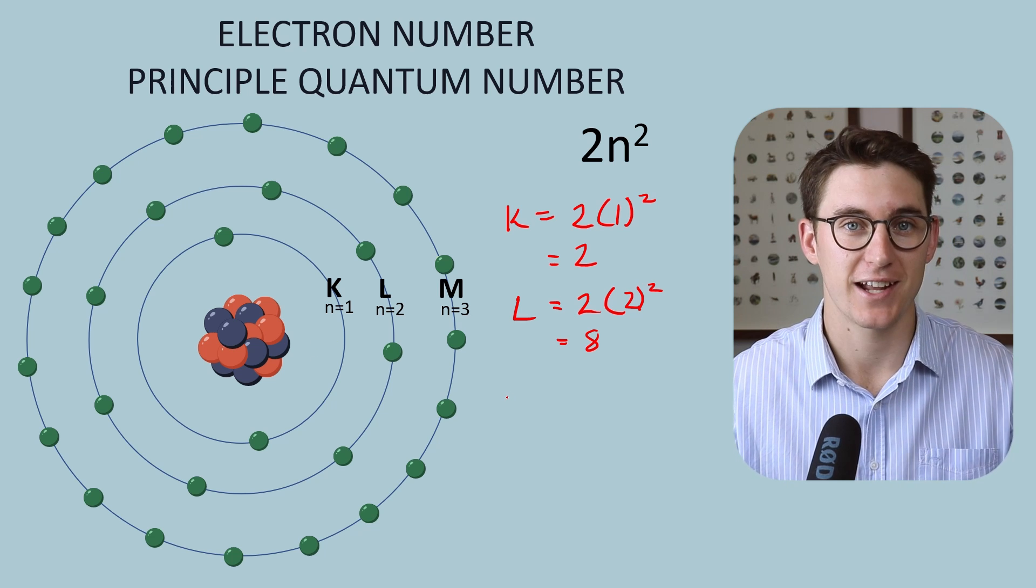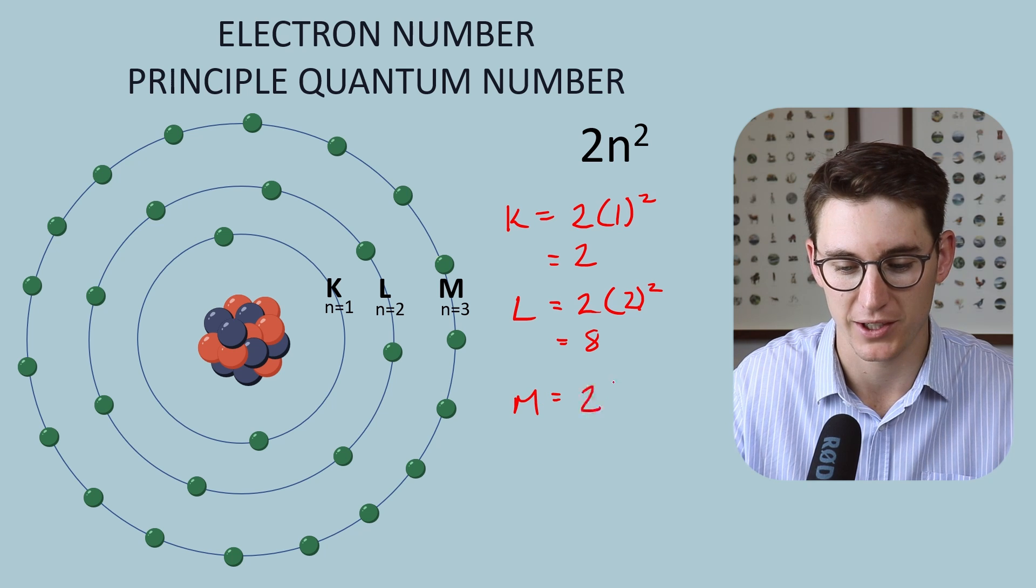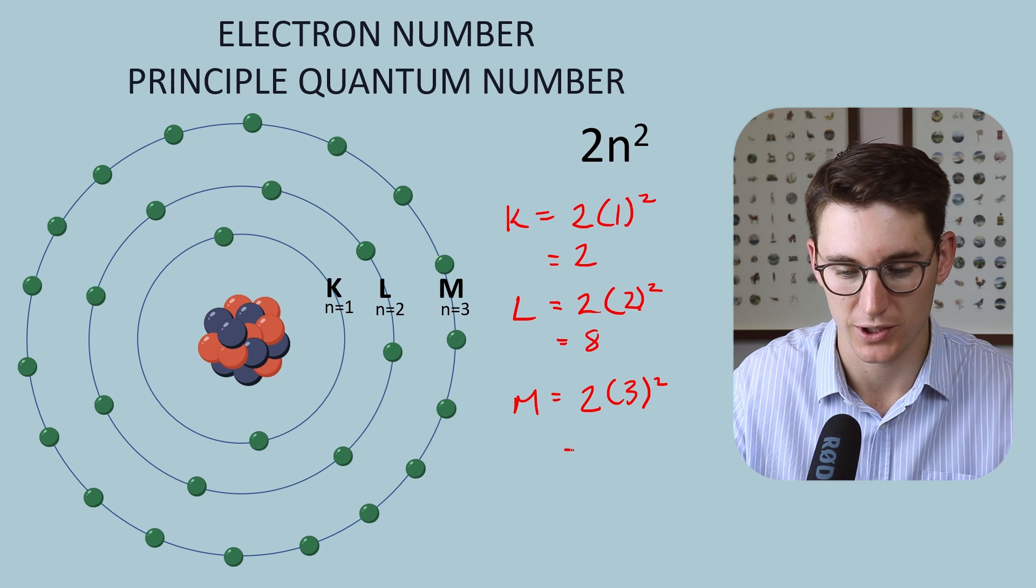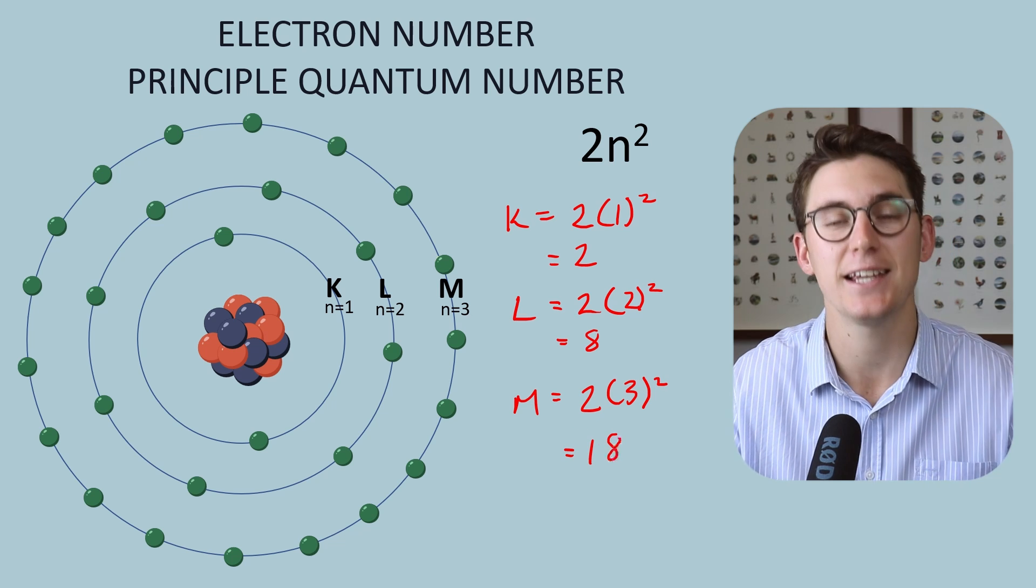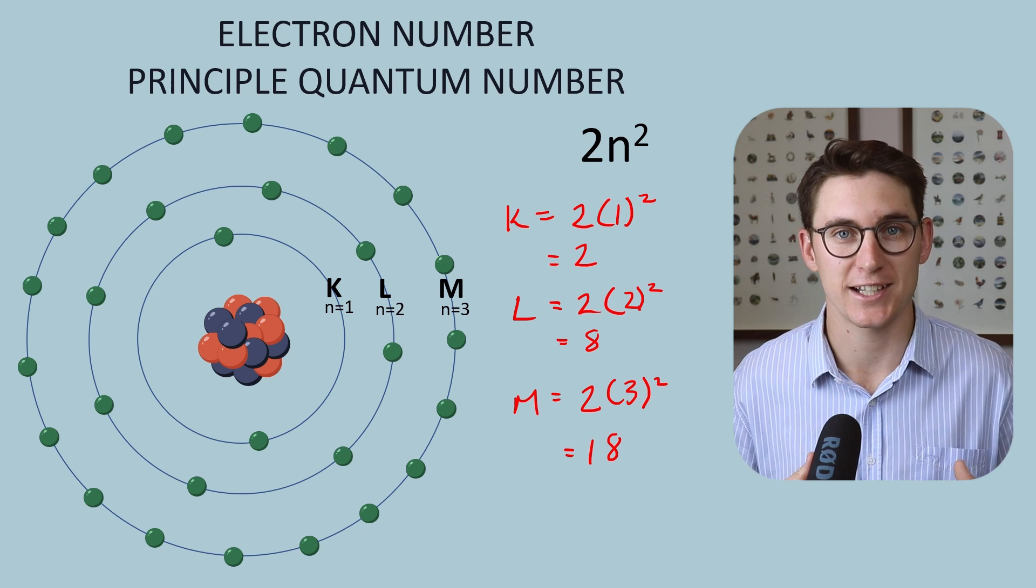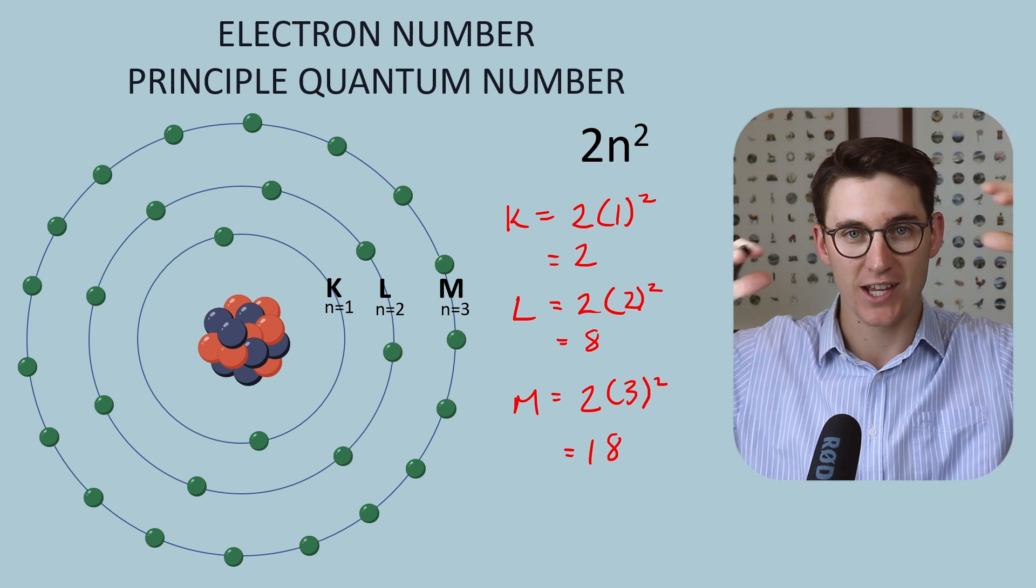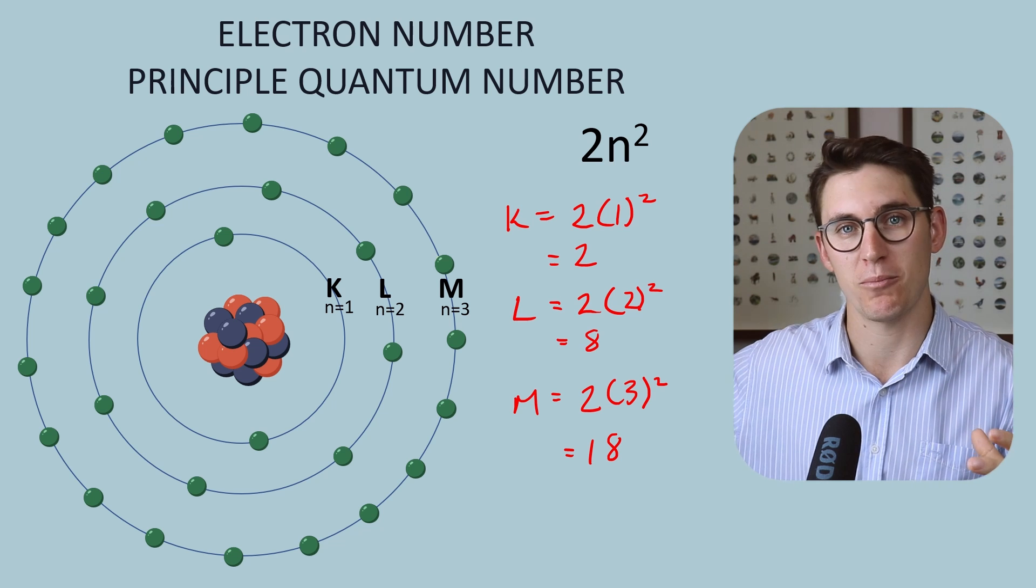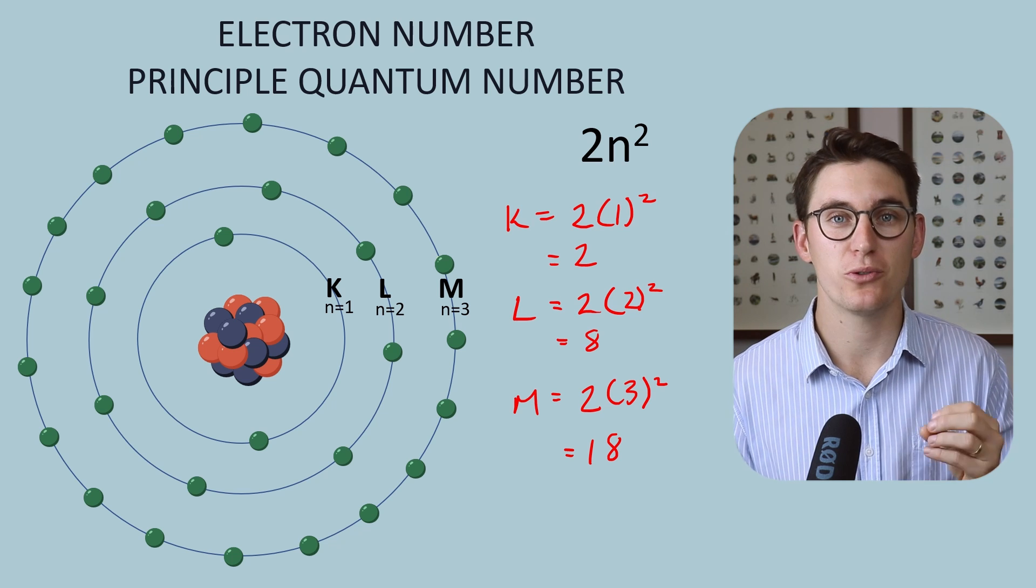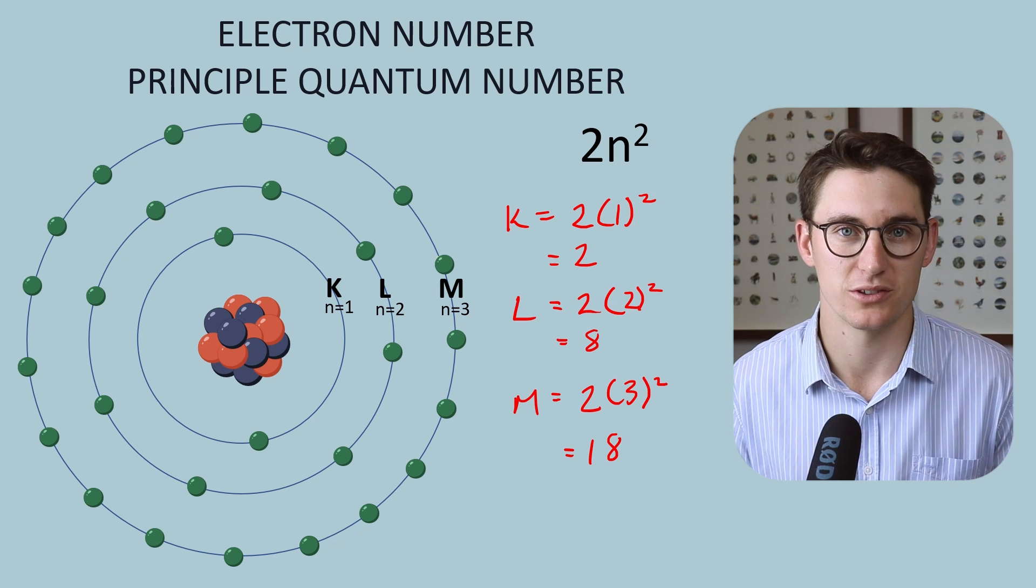Our M-shell then can house more electrons. Let's have a look at our M-shell. Our principal quantum number here is 3. 3 to the power of 2 is 9 times 2 equals 18. We can get 18 electrons within our M-shell. So you can see the larger atoms, more energy levels can house more and more electrons in those further out L-M-N-O electron shells. What is responsible for these numbers, the number of electrons within each shell, is our electron orbitals.